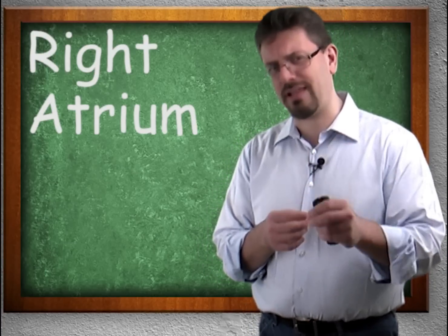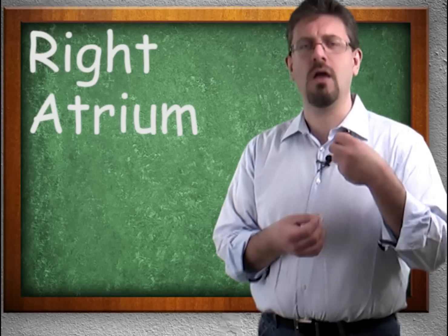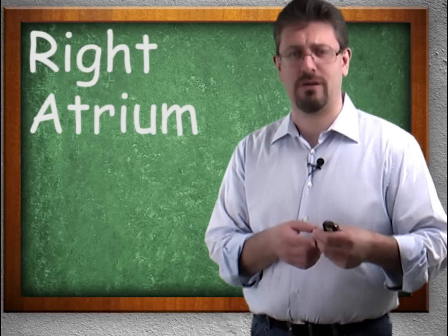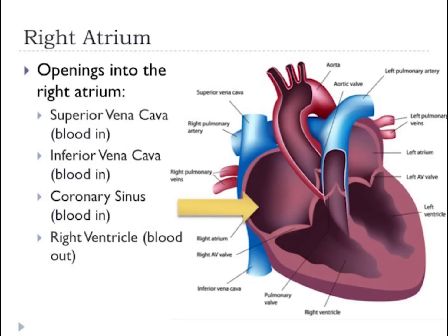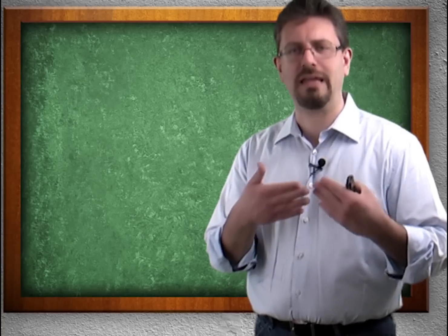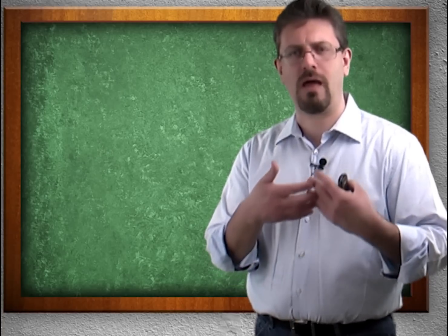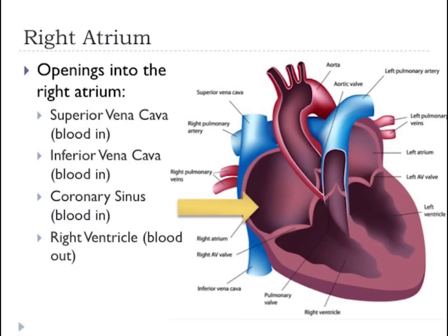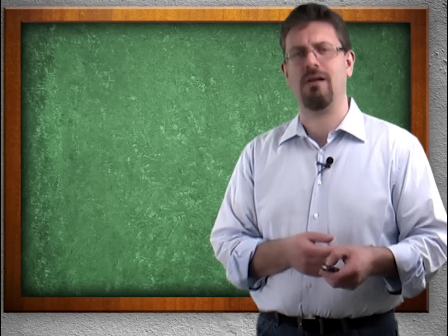The openings — and depending on your class, you might be quizzed specifically on what are the openings into each of these, so we're going to cover those. The openings into the right atrium include the superior vena cava, the inferior vena cava, and the coronary sinus. These are all blood-in routes — how blood gets into the right atrium. The opening that gets blood out of the right atrium is into the right ventricle.